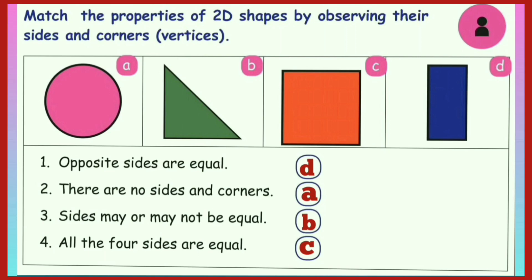Let us recap: first one, opposite sides are equal - the answer is D, rectangle. Second one, there are no sides and corners - the answer is A, circle. Third one, sides may or may not be equal - the answer is B, triangle. Fourth one, all 4 sides are equal - the answer is C, square.